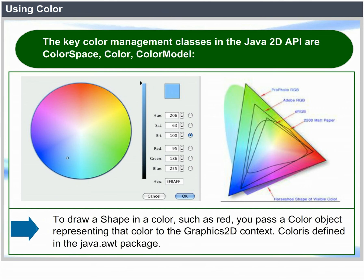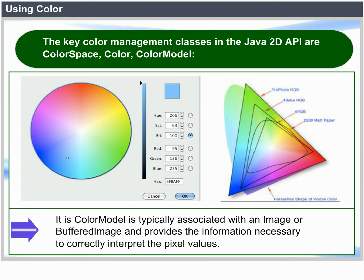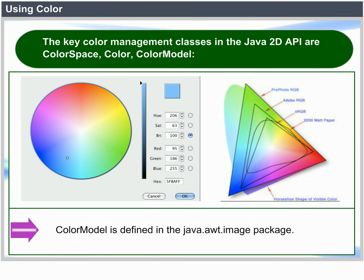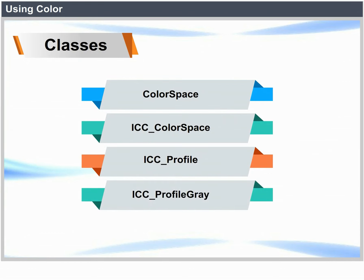To draw a shape in a color such as red, you pass a Color object representing that color to the Graphics2D context. Color is defined in the java.awt package. A ColorModel describes a particular way that pixel values are mapped to colors. It is typically associated with an image or BufferedImage and provides the information necessary to correctly interpret pixel values. ColorModel is defined in the java.awt.image package. Classes: ColorSpace, ICC_ColorSpace, ICC_Profile, ICC_ProfileGray, ICC_ProfileRGB.